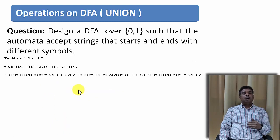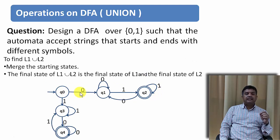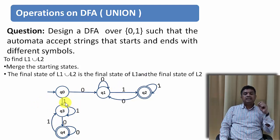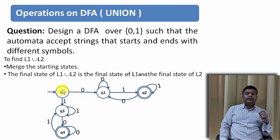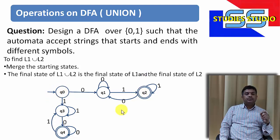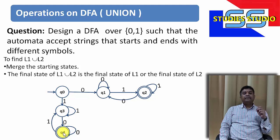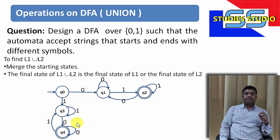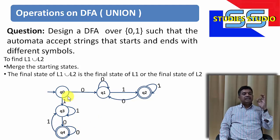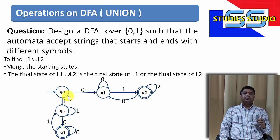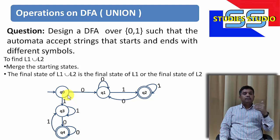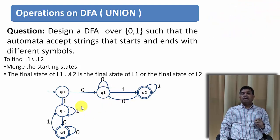Coming back to our problem: one part of the DFA accepts strings starting with 0 and ending with 1, and the other part accepts strings starting with 1 and ending with 0. When we combine their starting states, Q2 and Q4 become the final states of the combined DFA. This resulting DFA accepts all strings that start and end with different symbols.